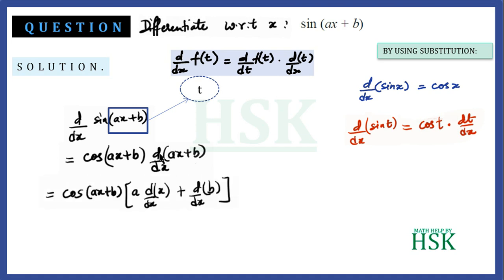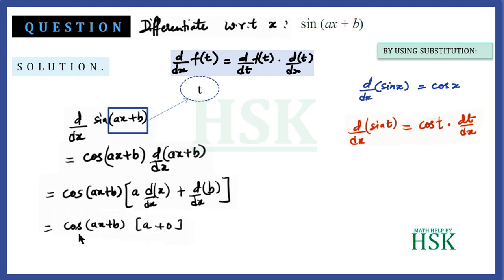Now d/dx of (ax+b) equals a · d/dx of x plus d/dx of b. Since b is a constant, d/dx of b is 0, and d/dx of x is 1. So this gives cos(ax+b) · (a + 0), which equals a·cos(ax+b) — the required answer.